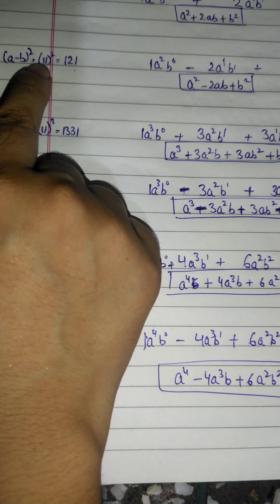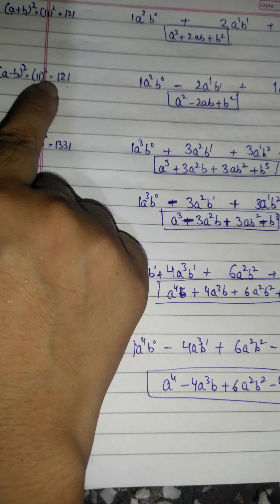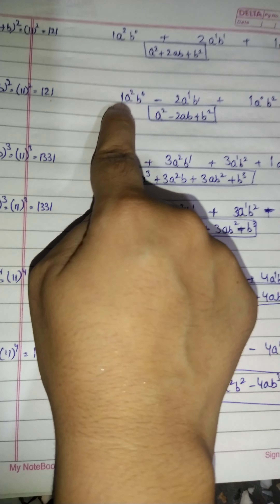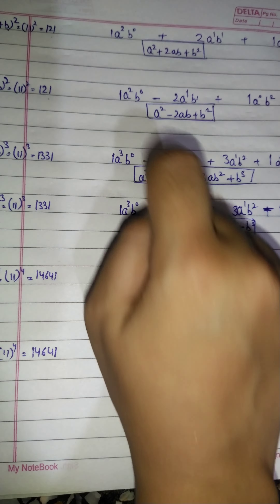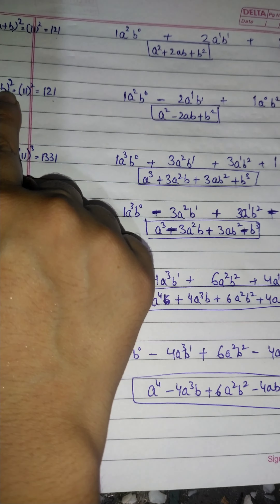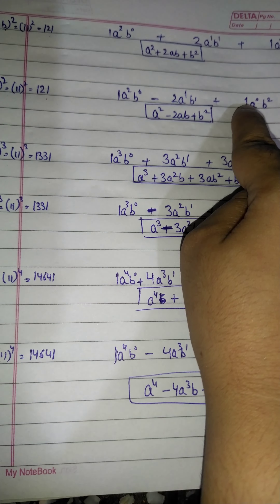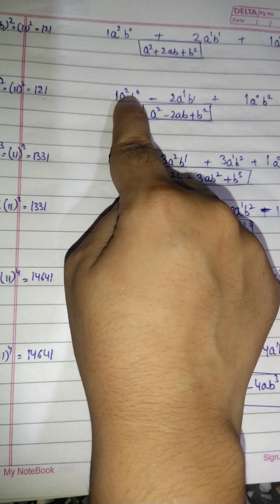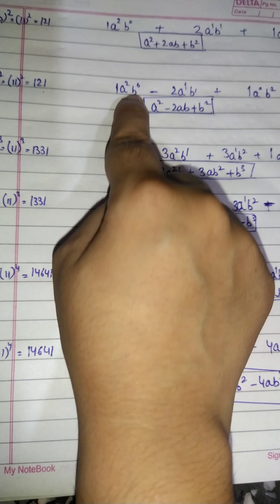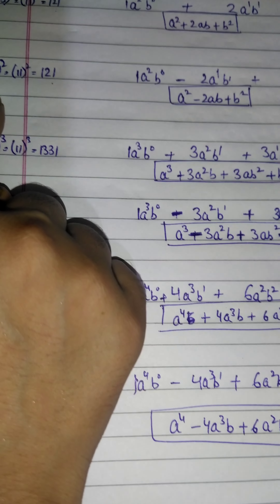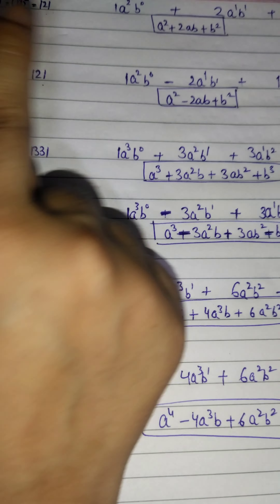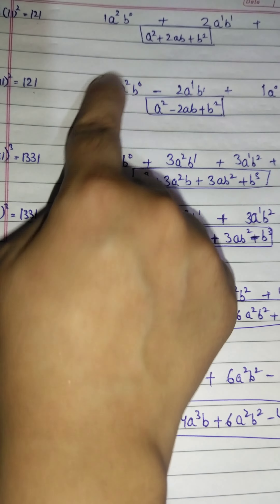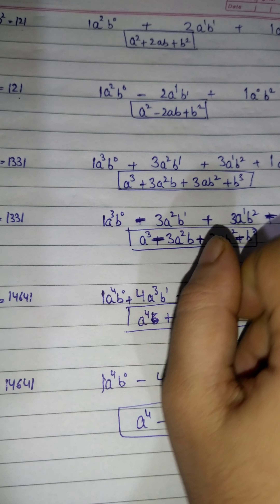Now for (a-b)², we again use 11² = 121, giving coefficients 1, 2, 1. We write a starting from the highest power: a², a¹, a⁰, and b in increasing order: b⁰, b¹, b². Since the sign is minus, we alternate: positive, negative, positive. So we get: a² − 2ab + b².